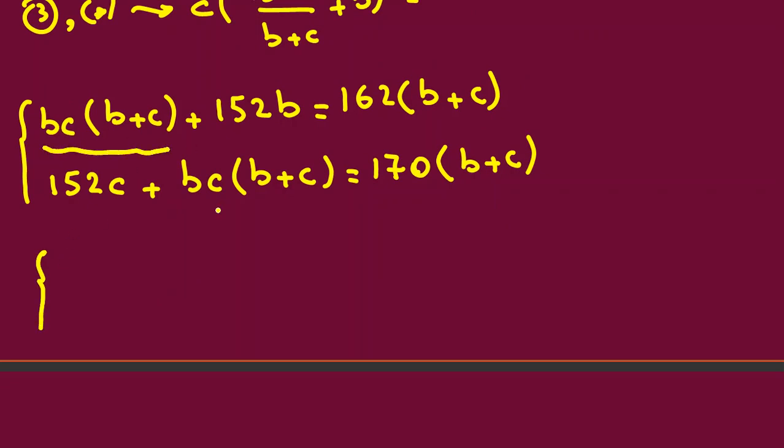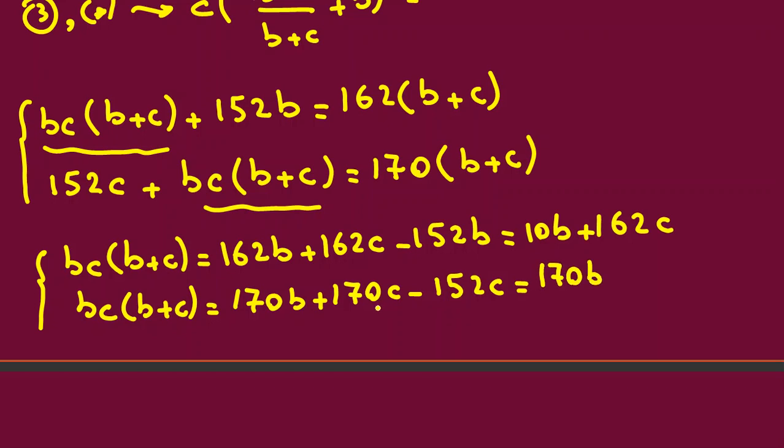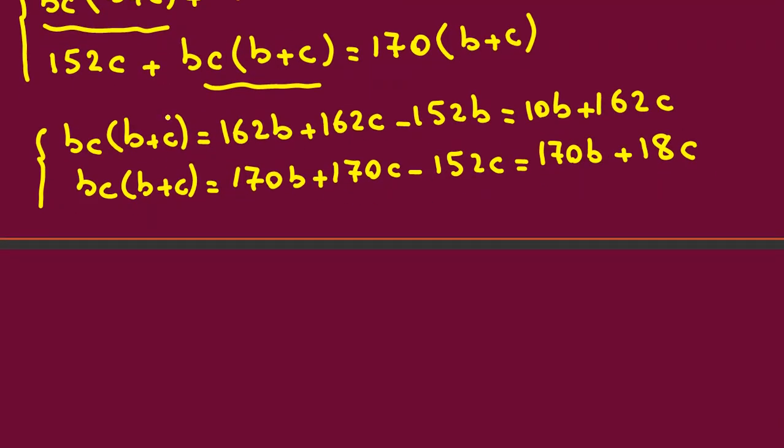Let's work more on these two equations. I say what? The first one, look, I have bc here, bc here. So from first equation I can say bc(b+c), I put it on left hand side, take all things to right hand side. It will be 162b, if I expand it, plus 162c. I take 152b to right hand side, it will be negative 152b. And 162b minus 152b is what? 10b plus 162c. The second equation, you write again bc(b+c) on left hand side, and take this to right hand side. It will be 170b plus 170c minus 152c. And it will be 170b plus 18c.